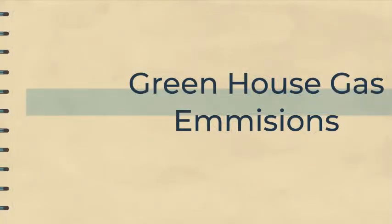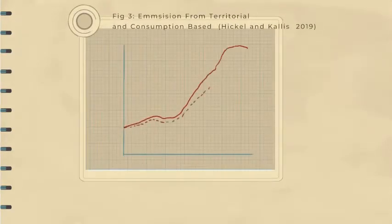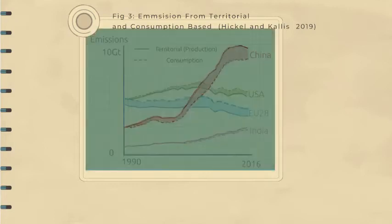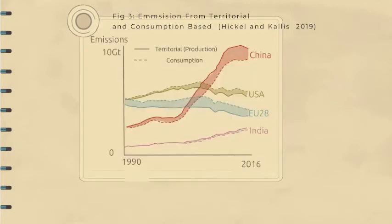For greenhouse gas emissions, there has been global relative decoupling, and absolute decoupling in the US and EU. This is true both for production and consumption-based measures. So, while these countries do still export a large portion of their carbon footprint, the emissions have been decreasing, even taking this into account.